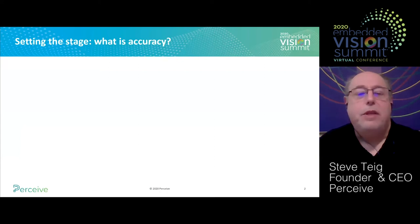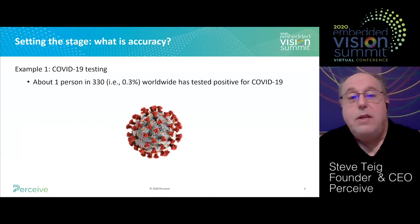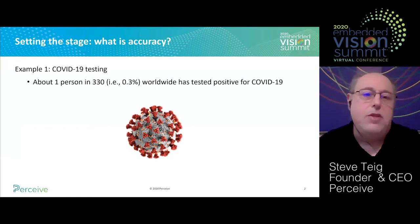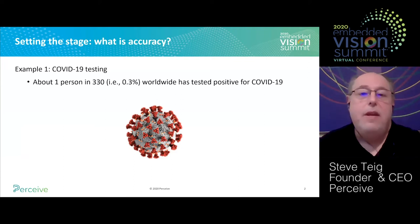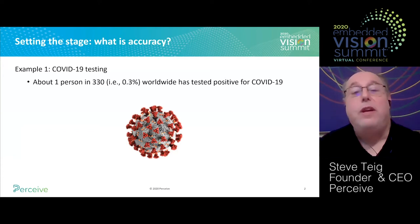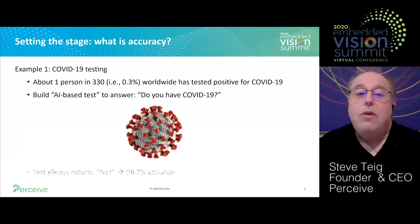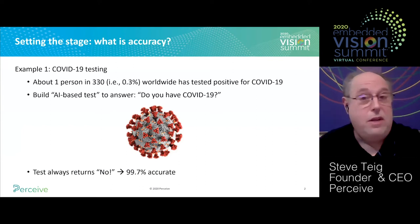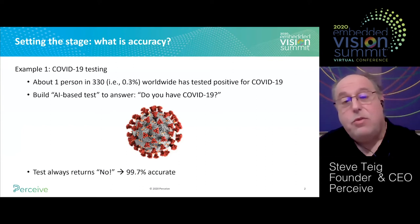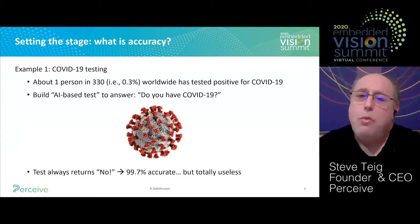To get things started, why don't we take a simple example? Everybody, of course, is talking about the pandemic these days, COVID-19, and as it happens at the time I built these slides, about one person in 330 worldwide — that is about 0.3% — have tested positive for COVID-19. I'm going to use AI to try to build a COVID-19 test to test whether you have COVID-19. My test always says no. It's 99.7% accurate because only 0.3% actually have tested positive, but it's totally useless. So what has gone wrong?